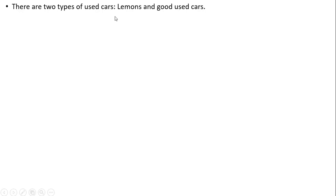So here we have two types of used cars: lemons and good used cars. The share of used cars that are lemons is given by S_L. The share of good used cars is 1 − S_L.